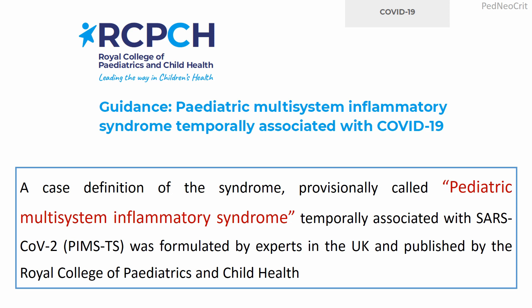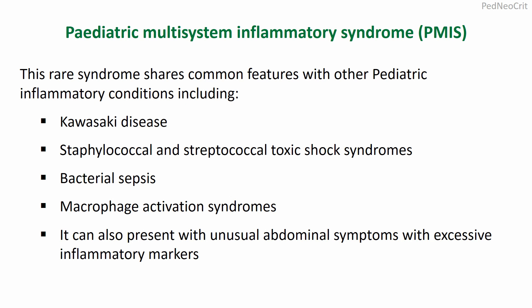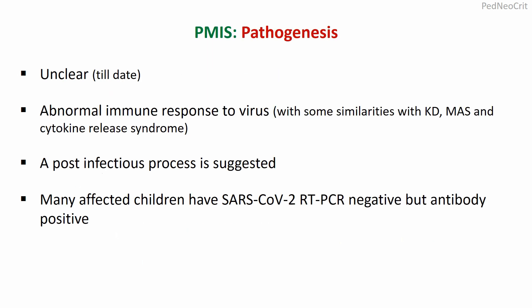A case definition of the syndrome — formally called Pediatric Multisystem Inflammatory Syndrome temporally associated with SARS-CoV-2 — was formulated by experts in the UK and published by the RCPCH. PMIS is a rare syndrome sharing common features with other pediatric inflammatory conditions including Kawasaki disease, staphylococcal and streptococcal toxic shock syndrome, bacterial sepsis, and macrophage activation syndrome. It can also present with unusual abdominal symptoms with excessive inflammatory markers. Pathogenesis is unclear, but it is possibly an abnormal immune response to the virus, and a post-infectious process is suggested because many affected children are SARS-CoV-2 RT-PCR negative but antibody positive.